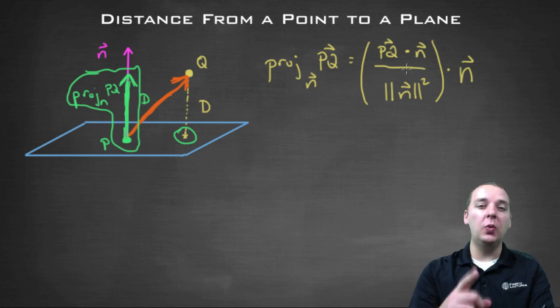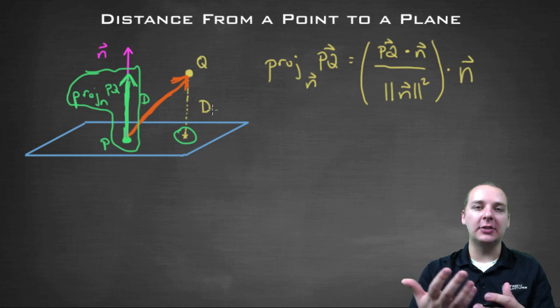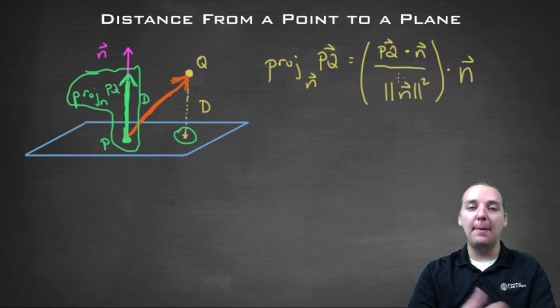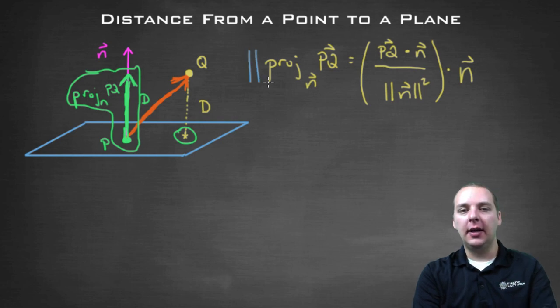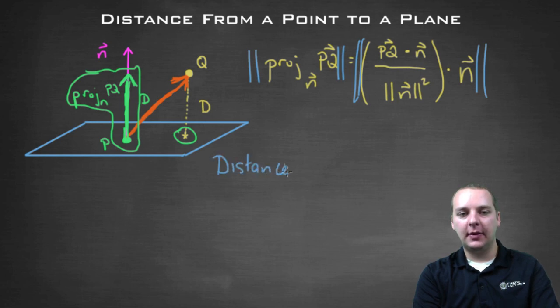Now I can actually do you one better than that. This isn't even technically what I want. The projection is a new vector. If I want the distance, what do I actually want? I want this guy's magnitude. That's actually what I want. So let me take this a step farther. What I really want is this guy's magnitude. I want the magnitude of this vector. So here we go. The distance that I'm looking for will be the magnitude of the projection of PQ onto vector N.